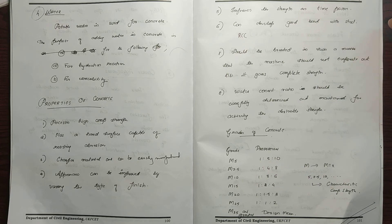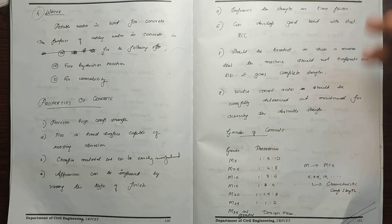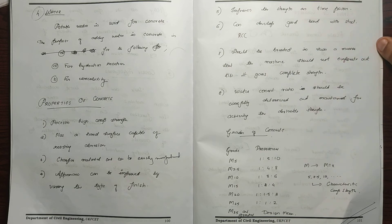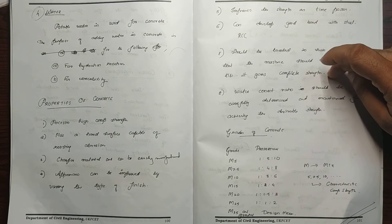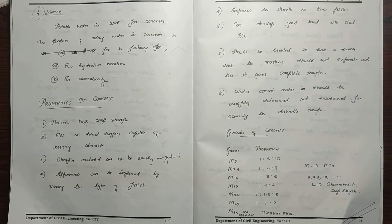Concrete should be treated in such a manner that moisture should not evaporate out until it gains complete strength. This process is called curing — water curing involves keeping all surfaces covered with water. The water-cement ratio must be carefully determined and maintained for the required strength.